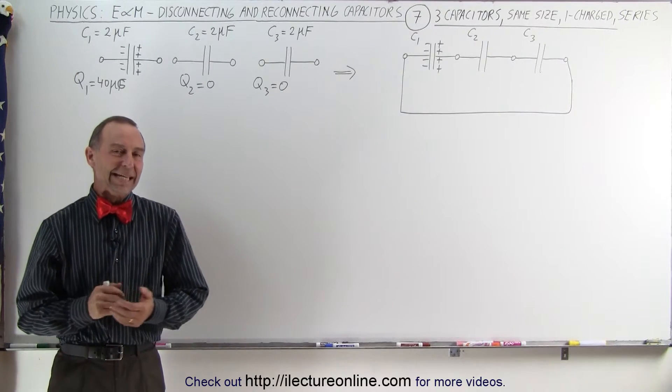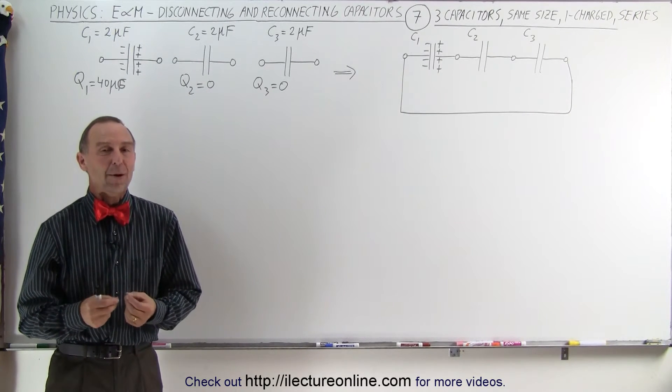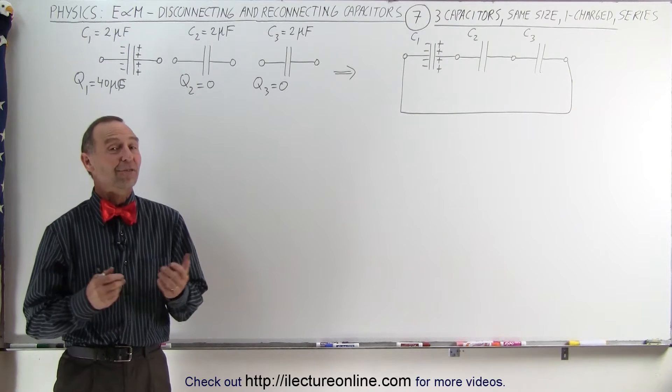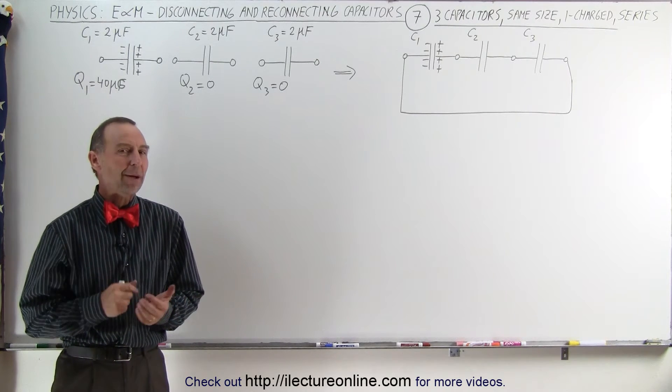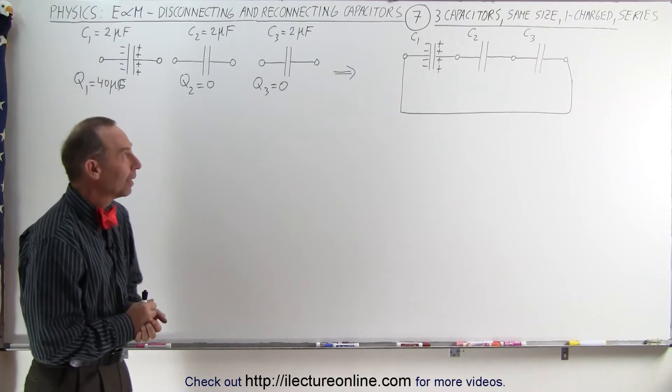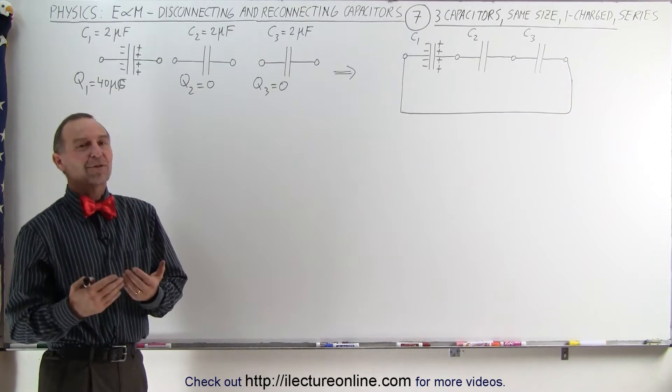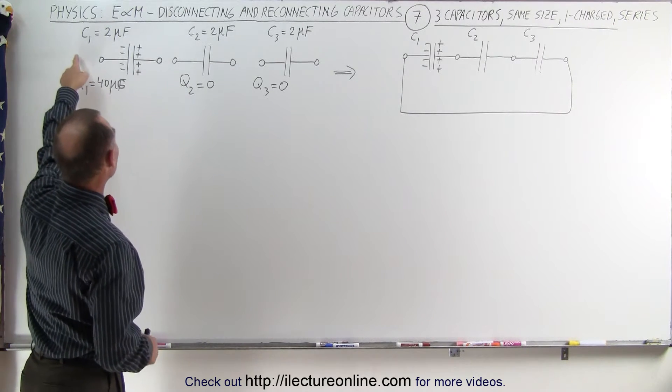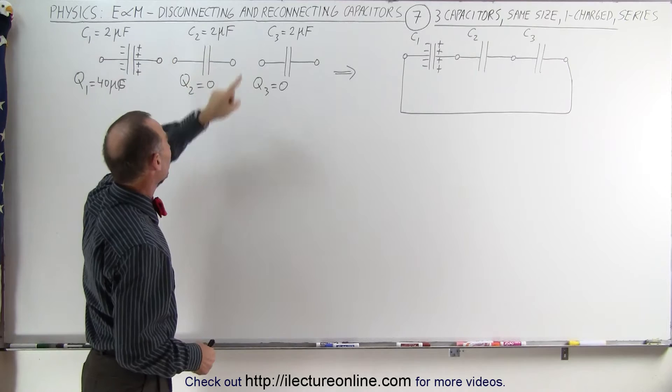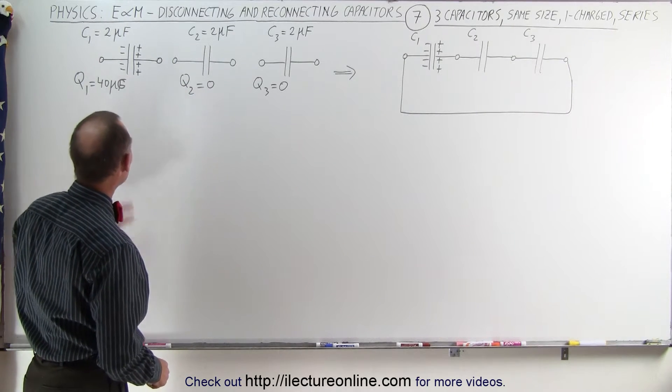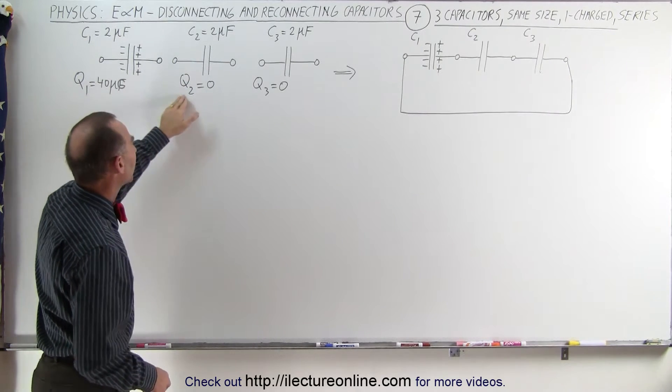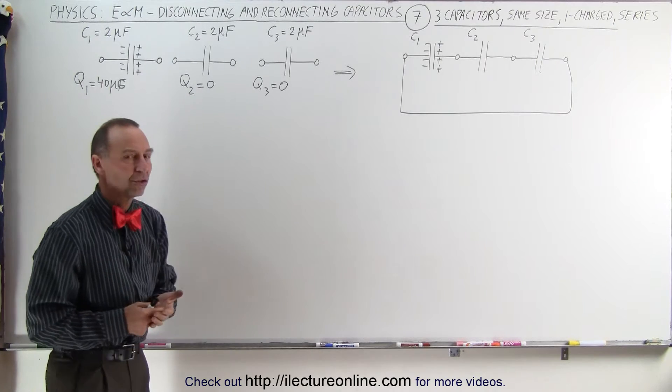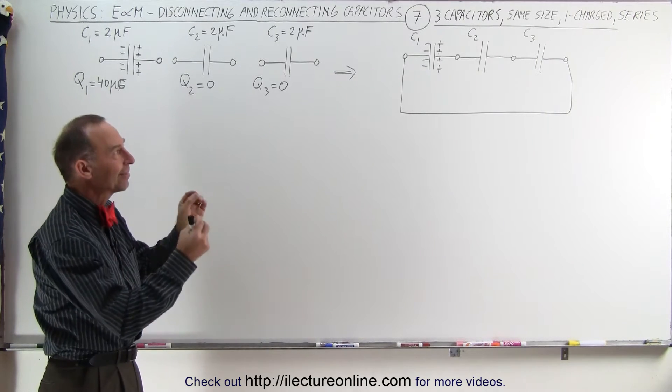Welcome to ElectronLine. In this example, we're starting with three capacitors instead of two, which makes the problem a little more complicated. Let's start as simple as possible. All three capacitors are the same size, two microfarads each, and only one of them is charged. The other two are originally not charged. We're connecting them in a series connection.